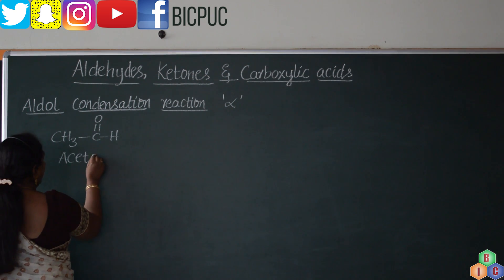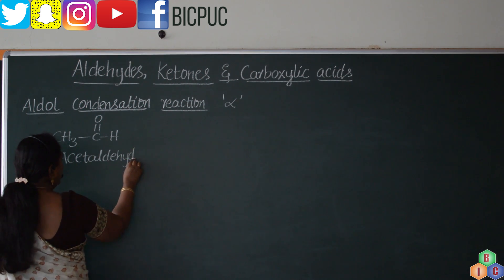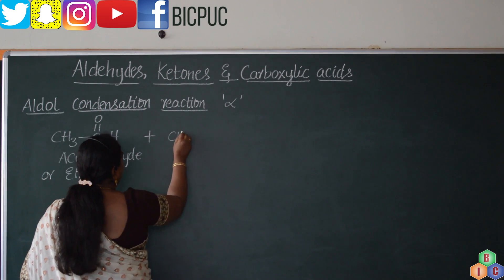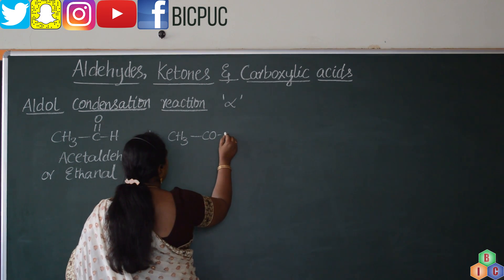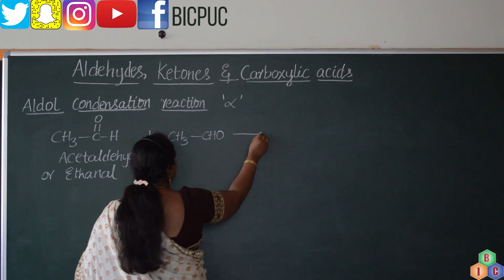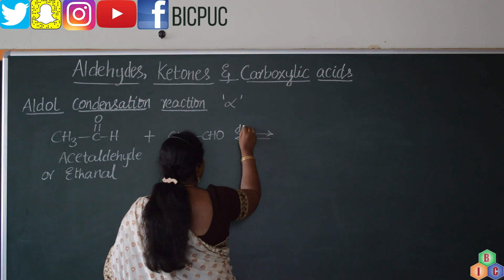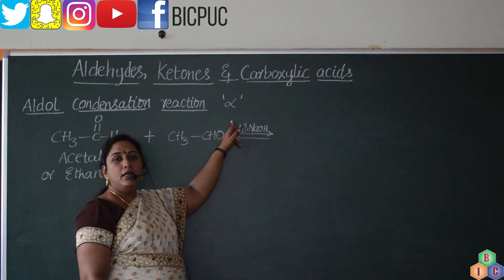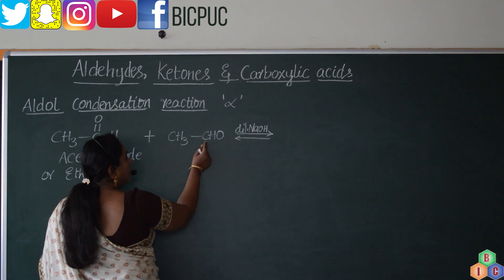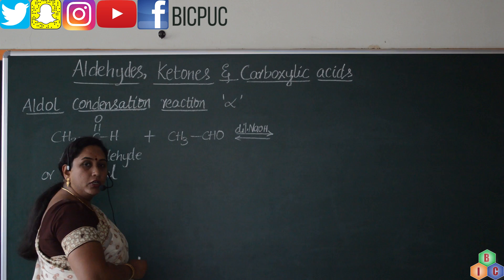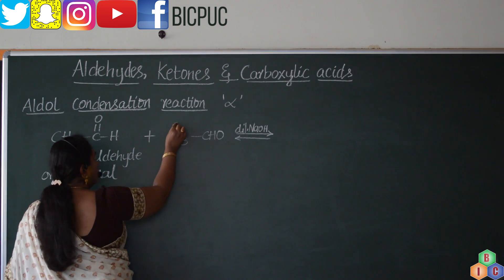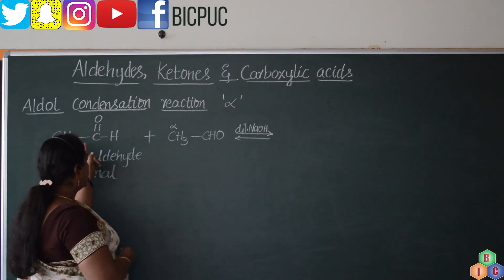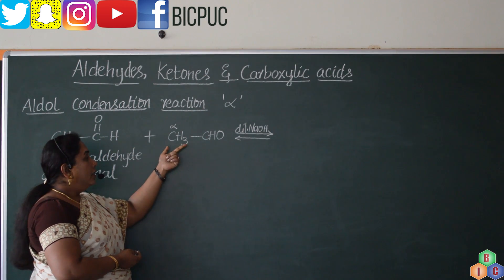The example considered is acetaldehyde. Acetaldehyde formula is CH3CHO. The IUPAC name of acetaldehyde is ethanal. This ethanal, when treated with dilute alkalis like sodium hydroxide, will undergo self-condensation since in its molecule it contains alpha hydrogen. The carbon present attached or next to the functional group is called the alpha carbon, and the hydrogen attached to the alpha carbon is called alpha hydrogen. This molecule of ethanal CH3CHO contains alpha hydrogen.